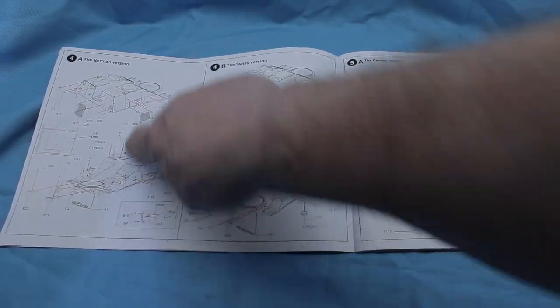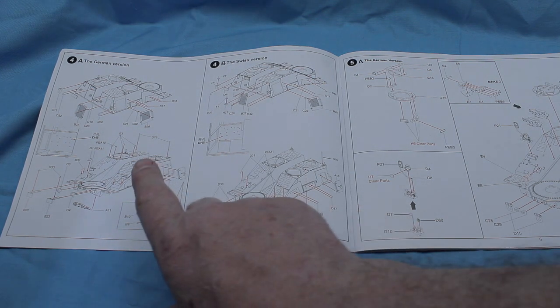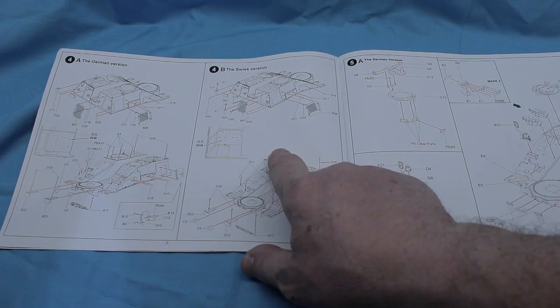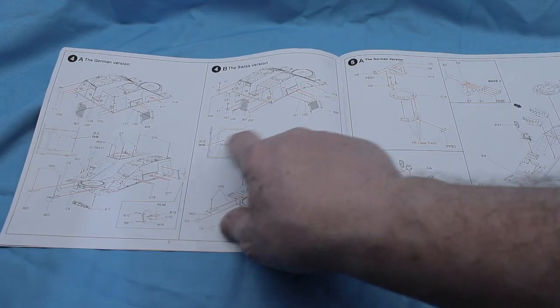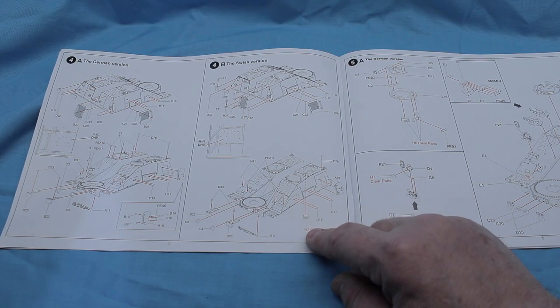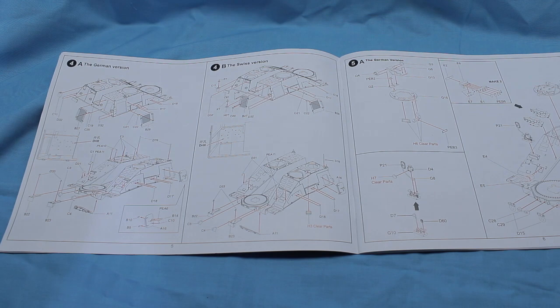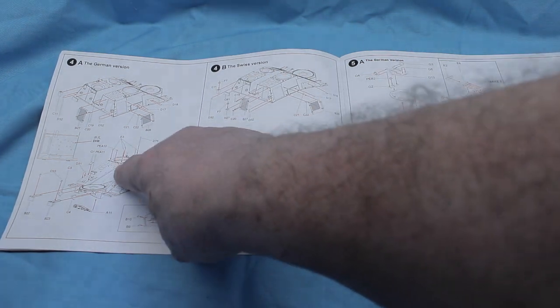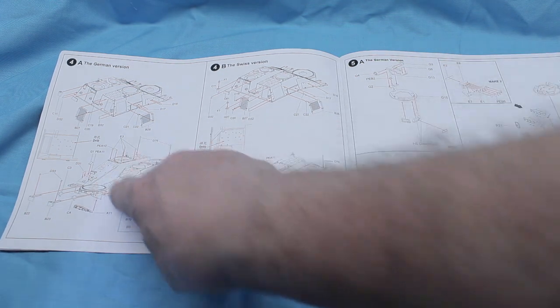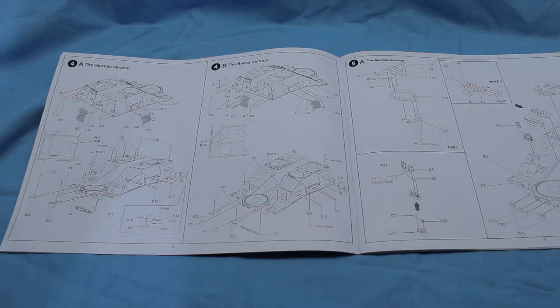Going through, it does have the axles that pivot, which is a nice effect, especially if you're going to do a diorama with this vehicle. And then you have the assembly of the road wheels. They have the little poly cap inside, which makes it nice. You can remove the road wheels and paint and all those aspects.